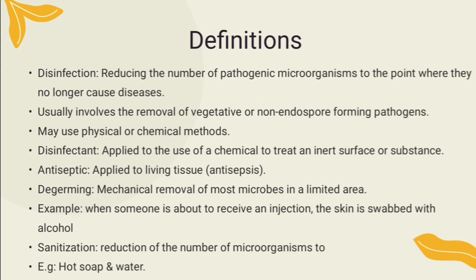Disinfection is the destruction of vegetative microorganisms via chemical or physical methods. Disinfection does not destroy bacterial endospores and can be achieved by chemicals, ultraviolet radiation, boiling water, or steam. Usually the term disinfection is used when inert substances or surfaces are treated chemically, and any disinfection of living tissue is called antisepsis. The chemical used is an antiseptic. Degerming is the mechanical removing of most microbes in a limited area; an example is cleaning skin with alcohol before receiving an injection. Medical instruments require sterilization, but in other areas microbes only need to be reduced to insufficient numbers to prevent infection, disease, and the transmission of infection and disease.